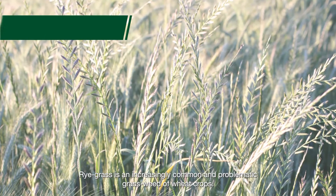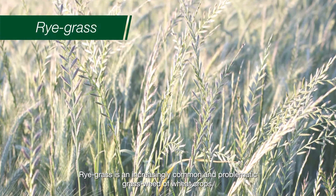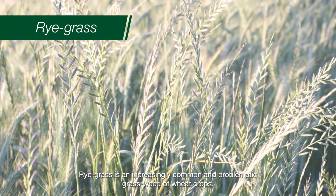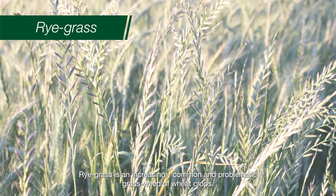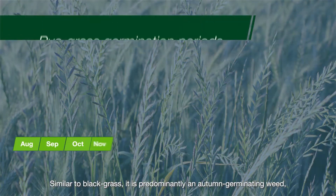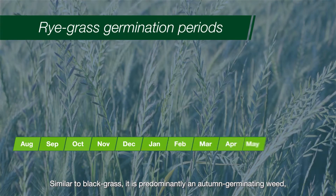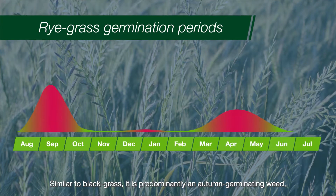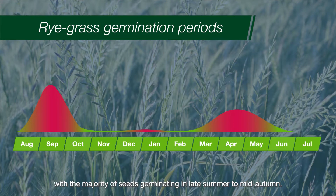Rye grass is an increasingly common and problematic grass weed of wheat crops. Similar to black grass, it is predominantly an autumn germinating weed with the majority of seeds germinating in the late summer to mid-autumn.